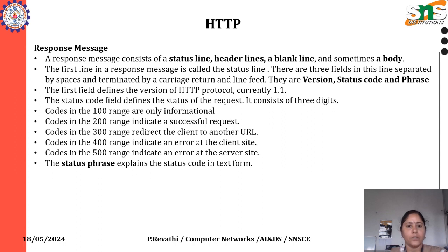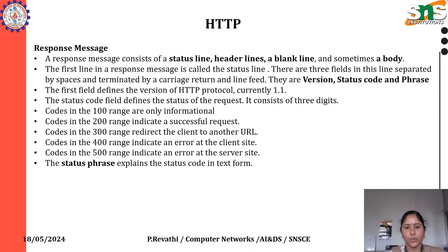The first field defines the version of the HTTP protocol, currently 1.1. The status code field defines the status of the request and consists of three digits. Codes in the 100 range are informational. The 200 range indicates a successful request. The 300 range indicates redirect the client to another URL. The 400 range indicates an error at the client side. The 500 range indicates an error at the server side.